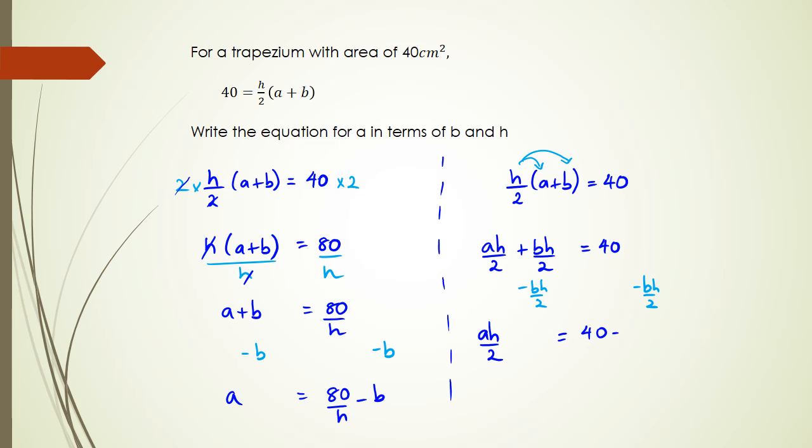The next step is I want to get rid of h over 2 on this side so a is by itself. So I could actually multiply this on the left-hand side by 2 over h and do the same thing on the right-hand side of the equation.